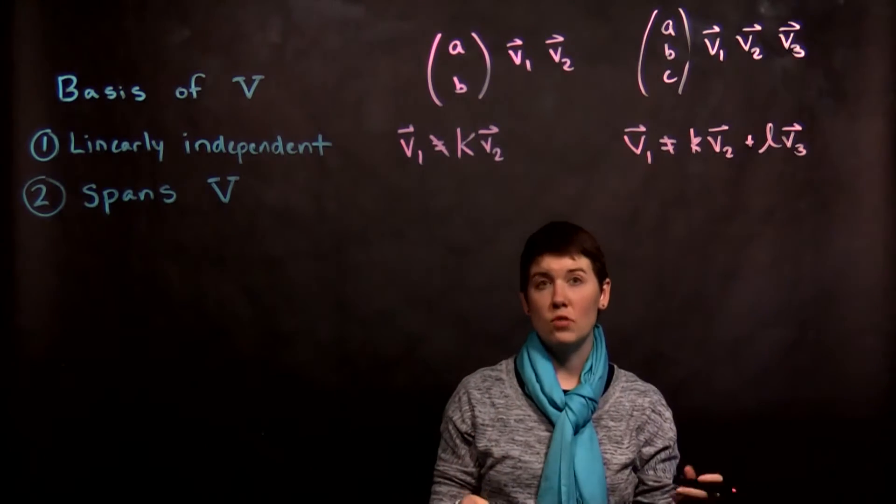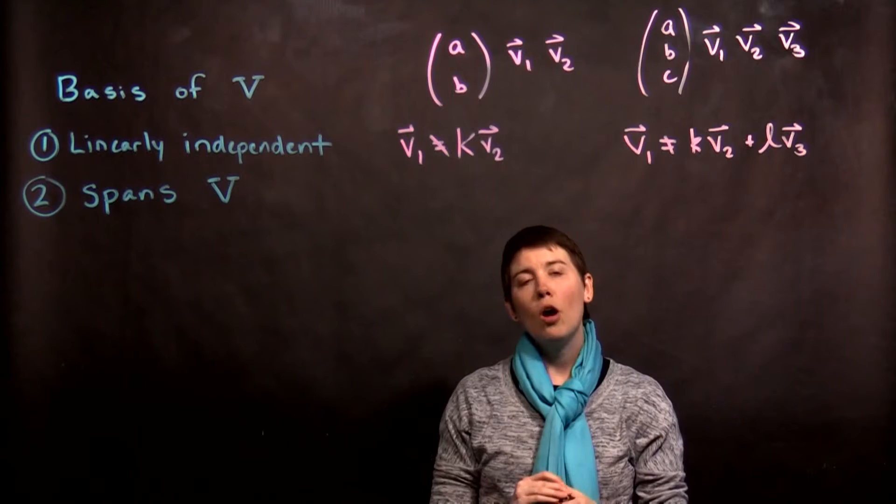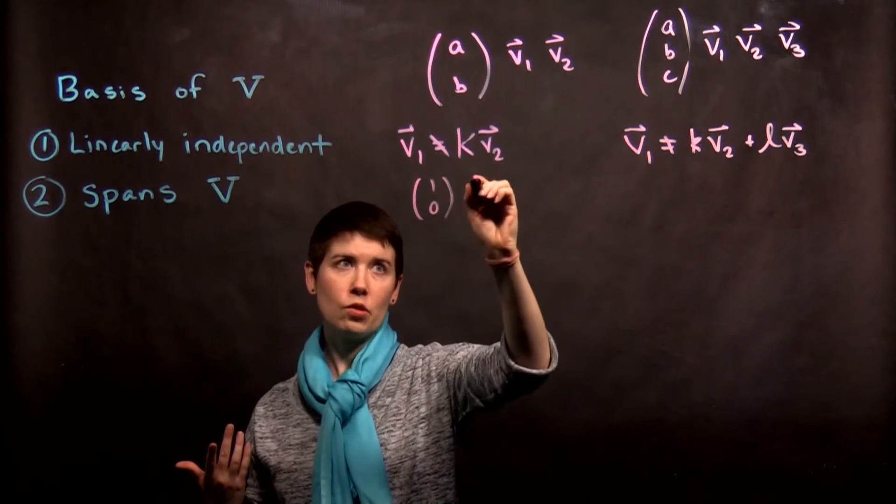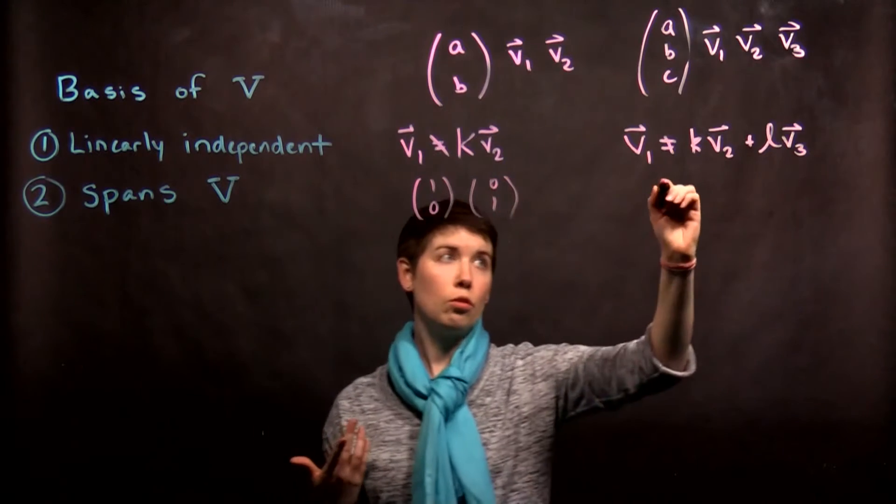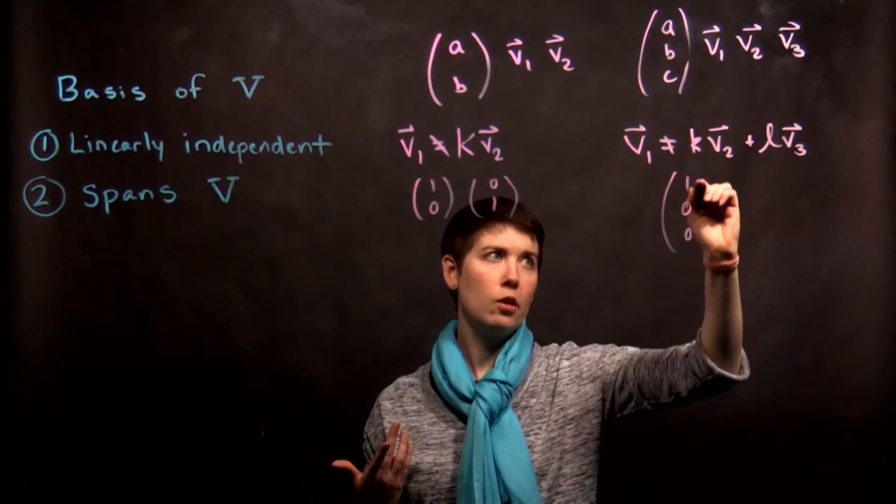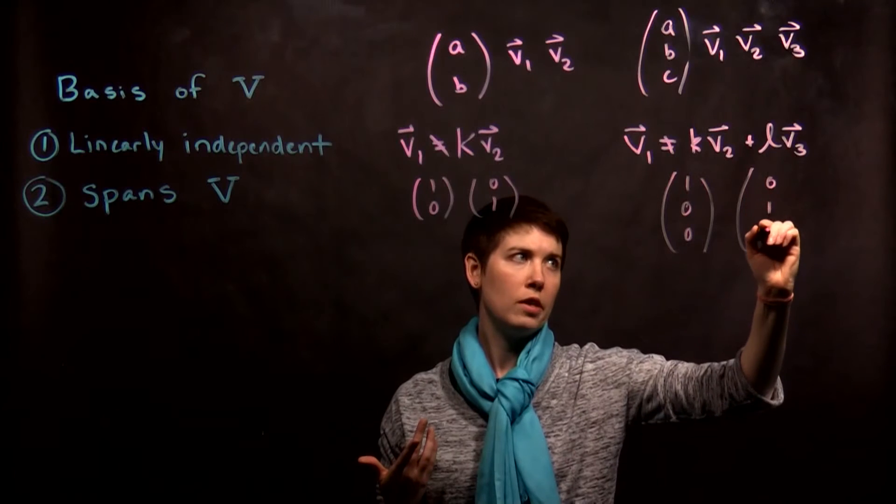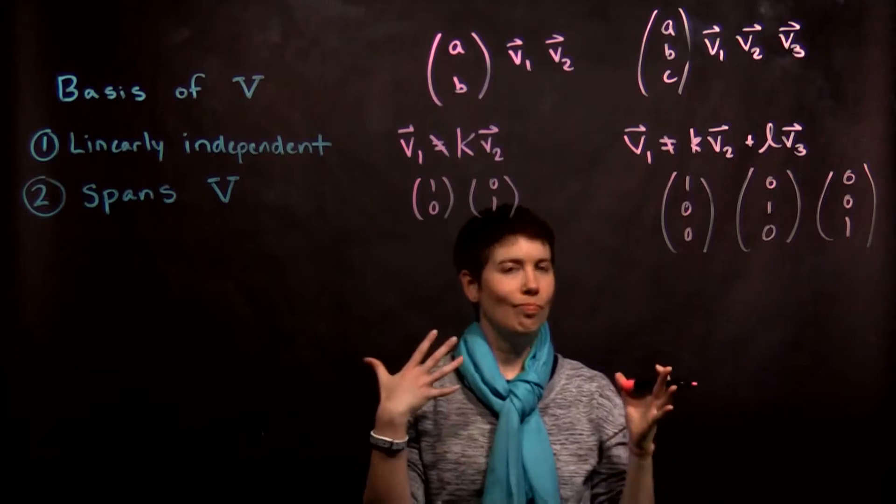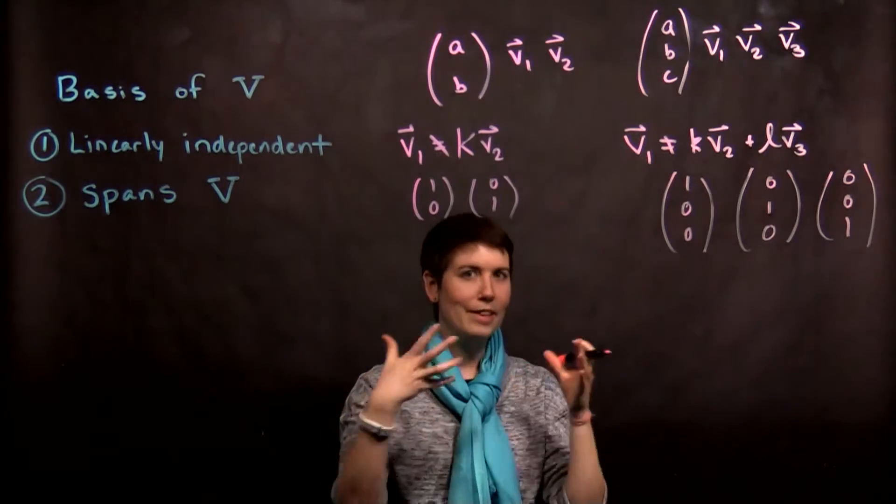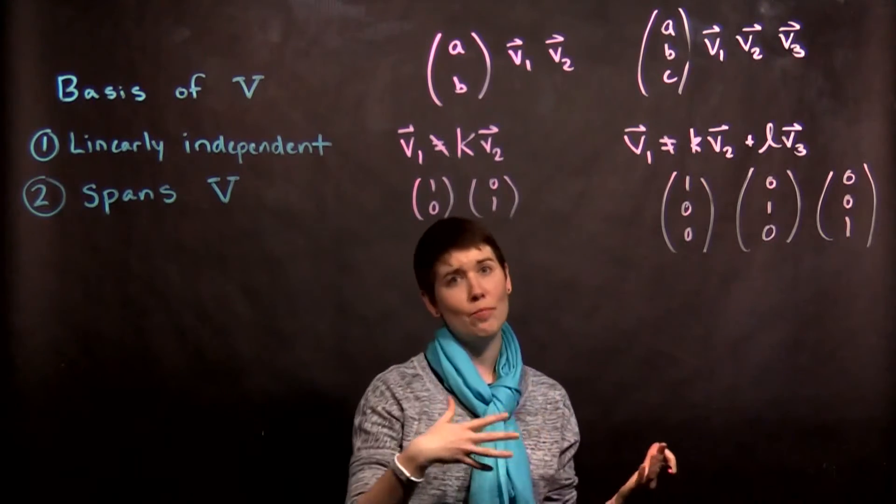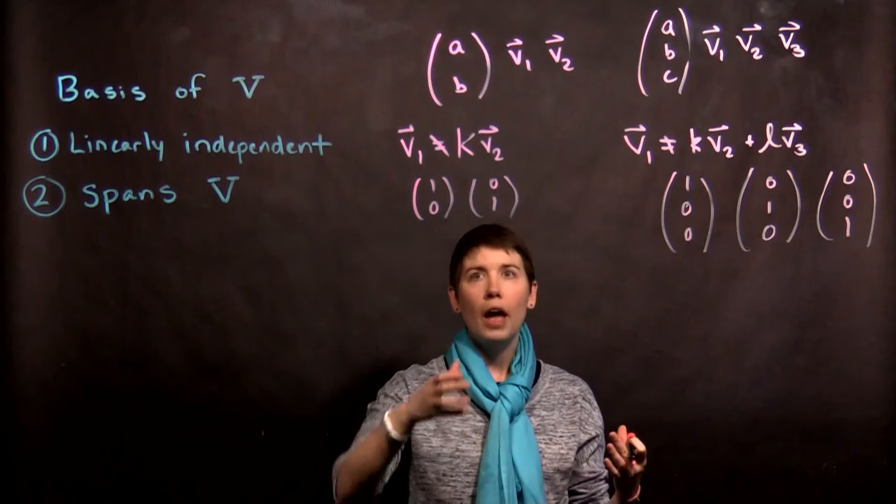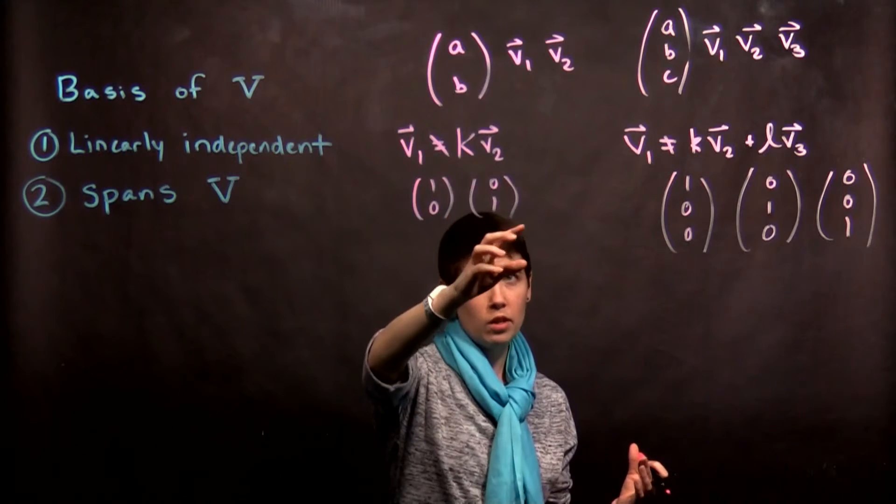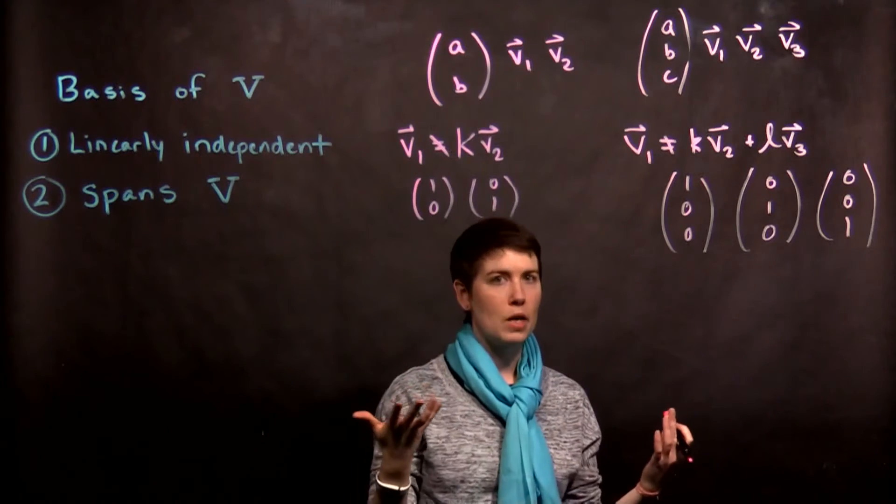This is a really concrete example of what this looks like. And often times what your basis vectors are going to look like are things like this. Or over here (1,0,0), (0,1,0), (0,0,1). So often times when we're working in our basis this is what our basis vectors look like. And so you can see that there's no way to create (1,0) out of (0,1) by just multiplying it by a scalar.